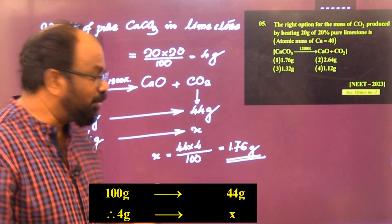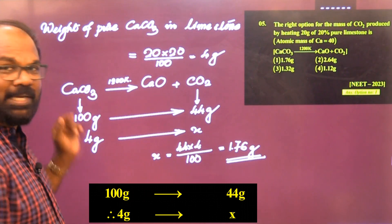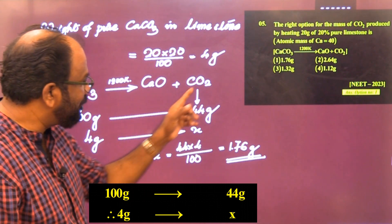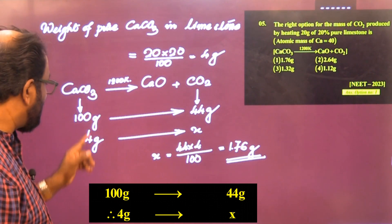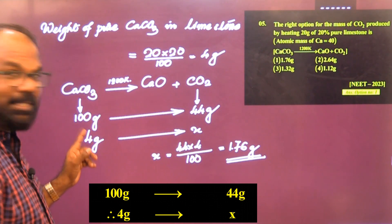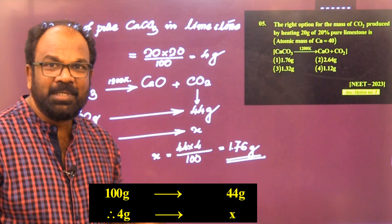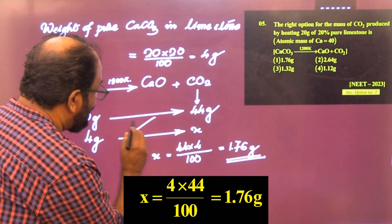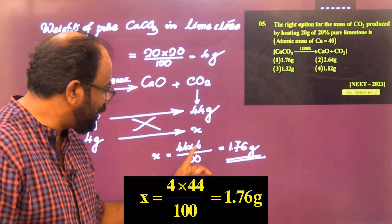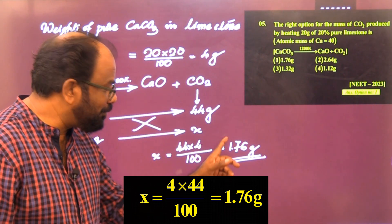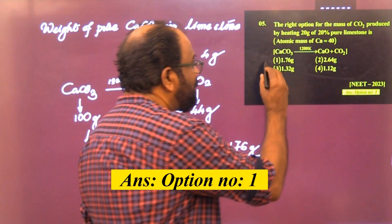According to the equation CaCO₃ → CaO + CO₂, 100g of CaCO₃ (molecular mass = 100) produces 44g of CO₂. Therefore, 4g of pure CaCO₃ produces x grams of CO₂. By cross multiplication: x = (44 × 4) / 100 = 1.76g. The answer is option 1.